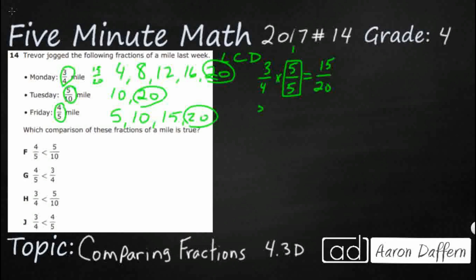Let's do our 5 tenths — multiply it by something to get 20ths. 10 times 2 makes 20, so we need to multiply by 2 over 2. Remember, 2 halves equals 1 as well. 5 times 2 makes 10. So 5 tenths is the same as 10 twentieths.